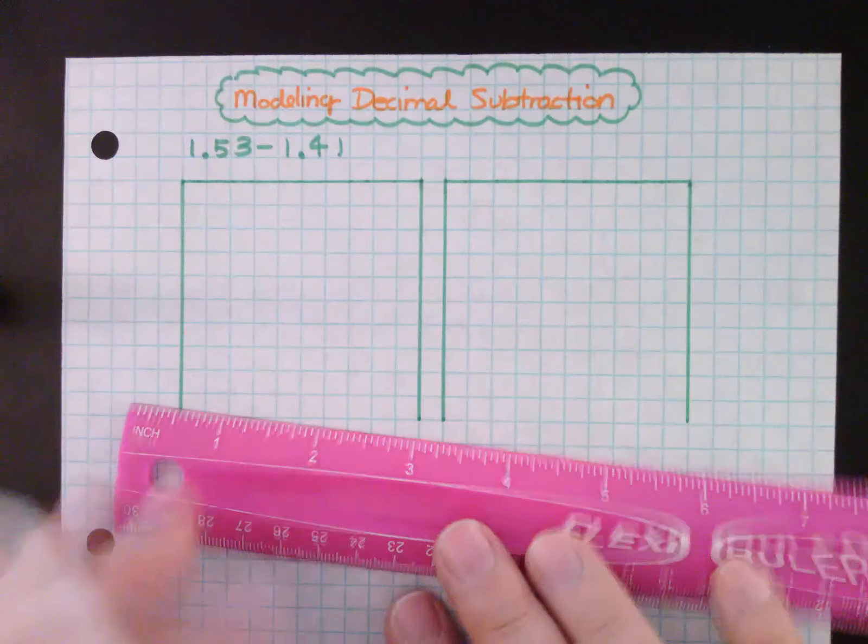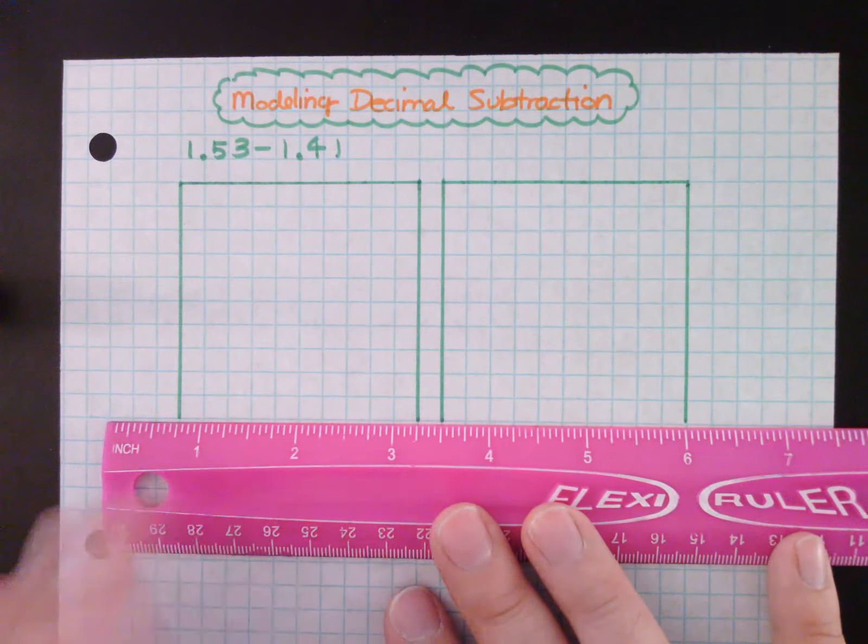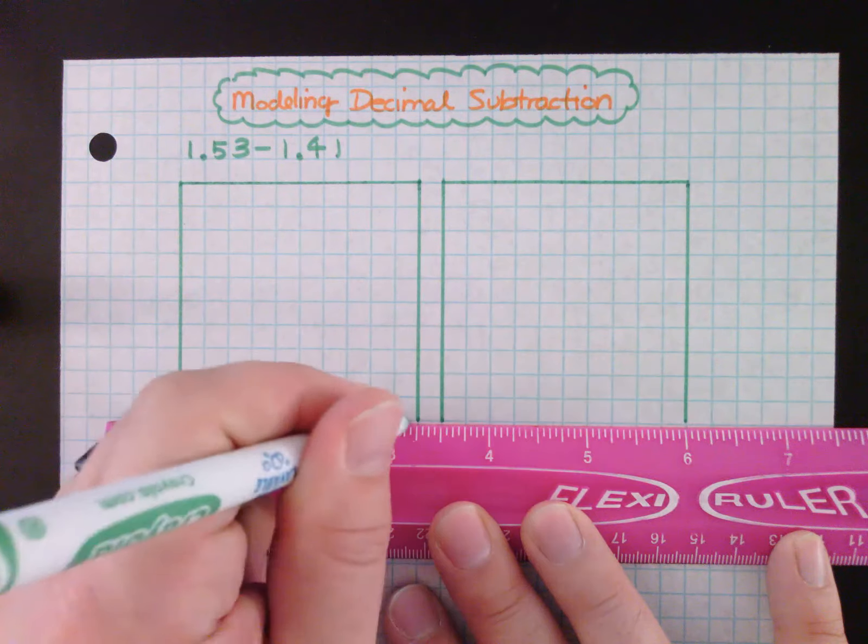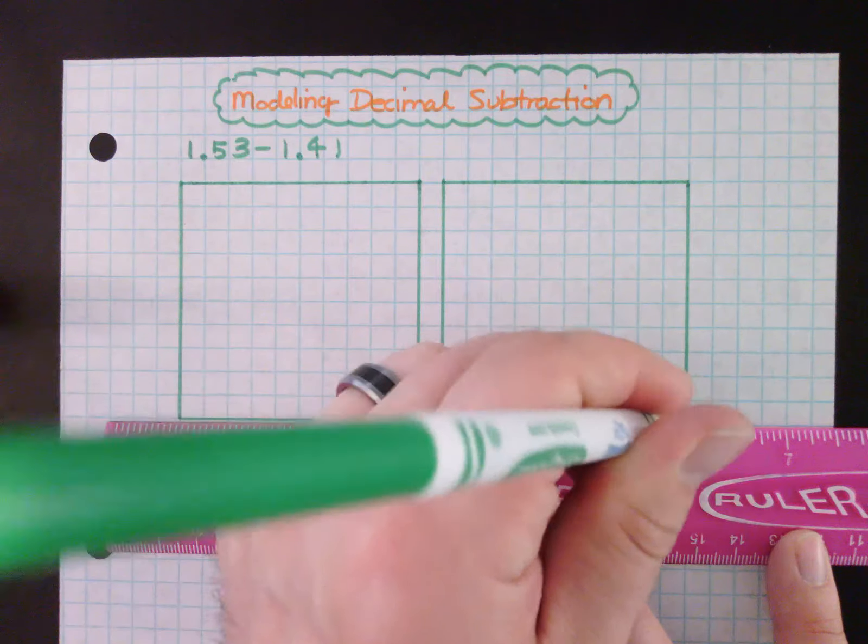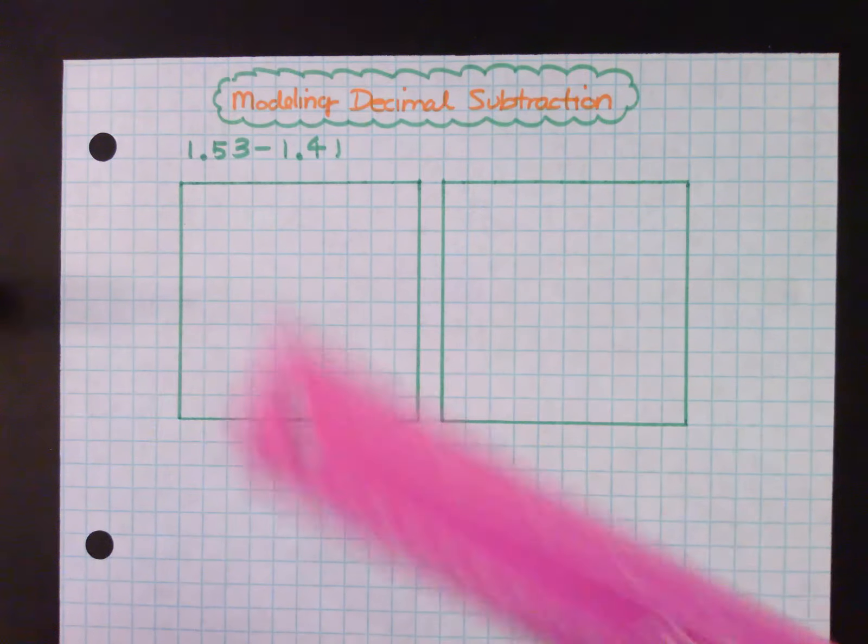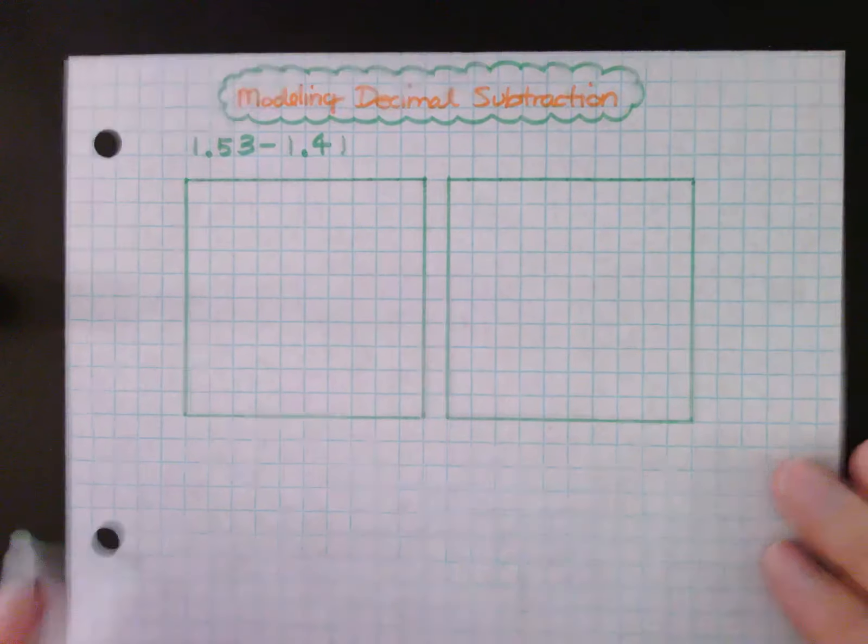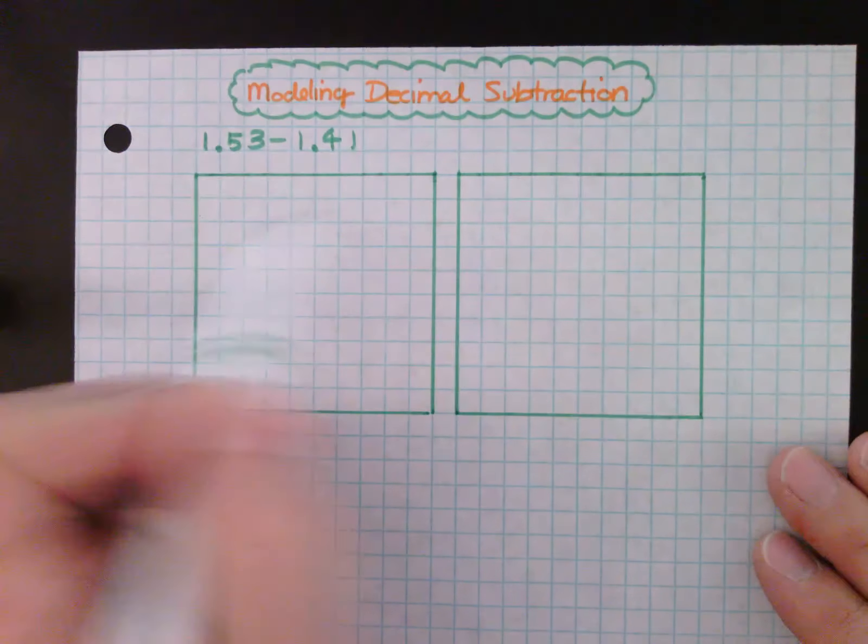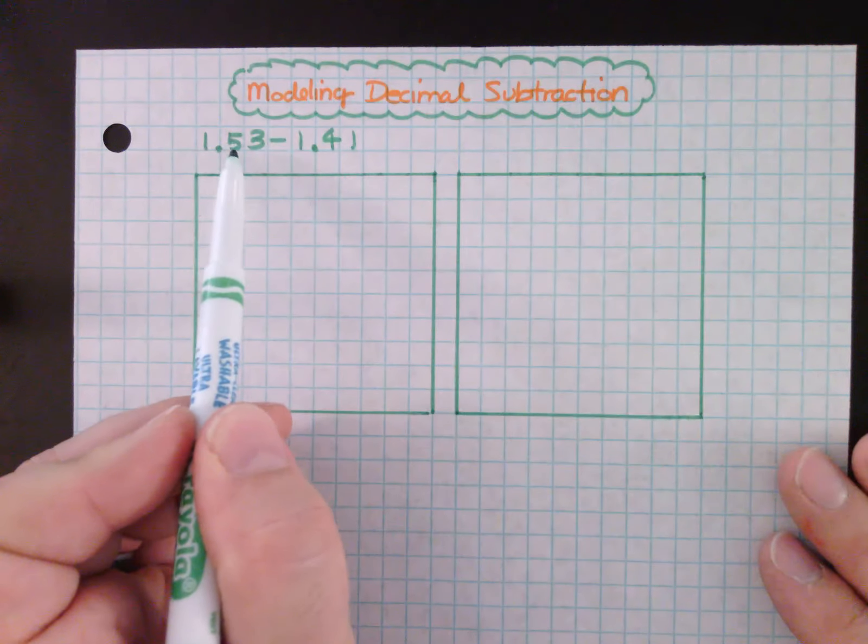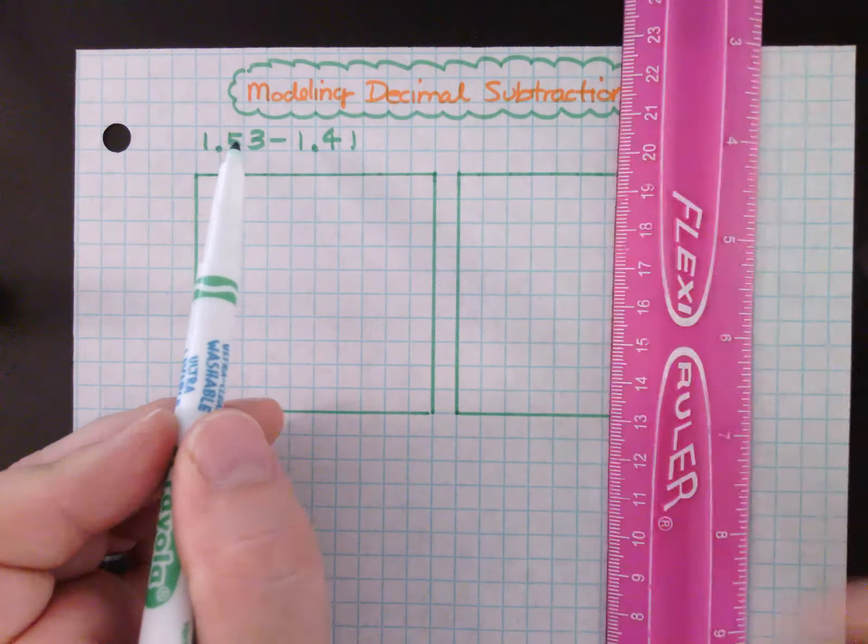Complete my two squares and now I need to identify my total or starting amount of 1.53. So I have this full one right here, and then I have five tenths, so let me make sure I draw five tenths.